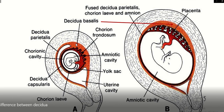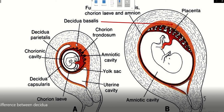In the early part of development, this is the chorion, this is the chorionic frondosum, this is the chorionic laeve, this is the decidua capsularis, and this is the decidua basalis. As the fetus grows, the chorionic laeve and decidua capsularis unite with the decidua parietalis, and the uterine cavity in between decidua capsularis and decidua parietalis is not seen after the advanced stage of pregnancy.